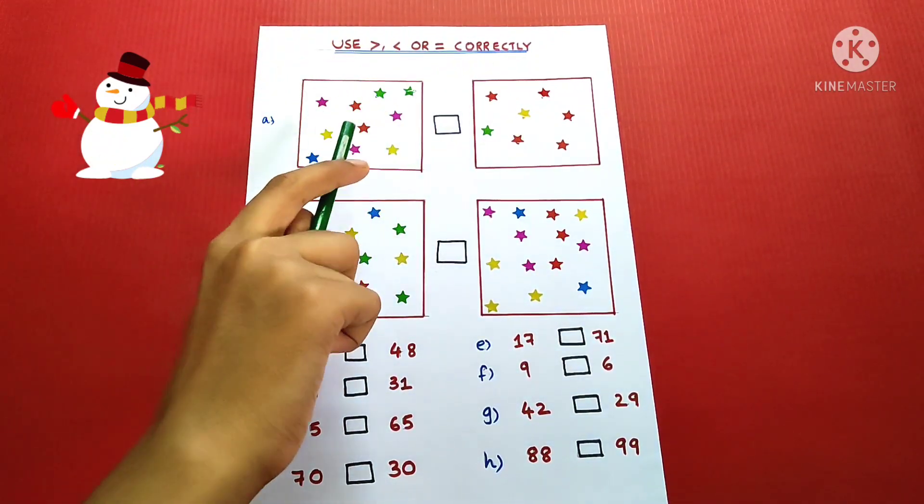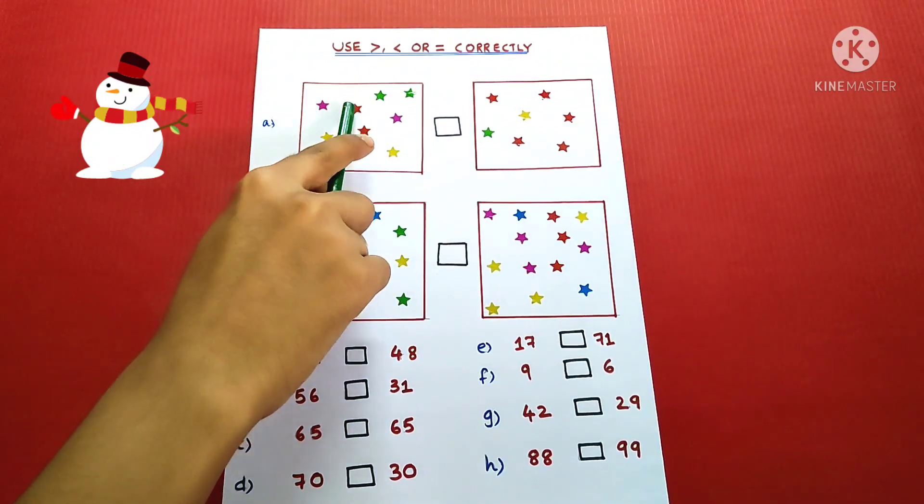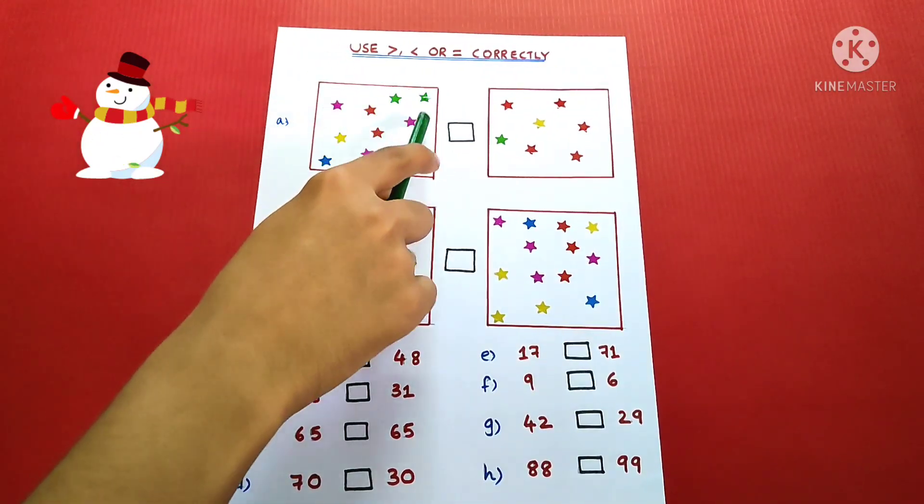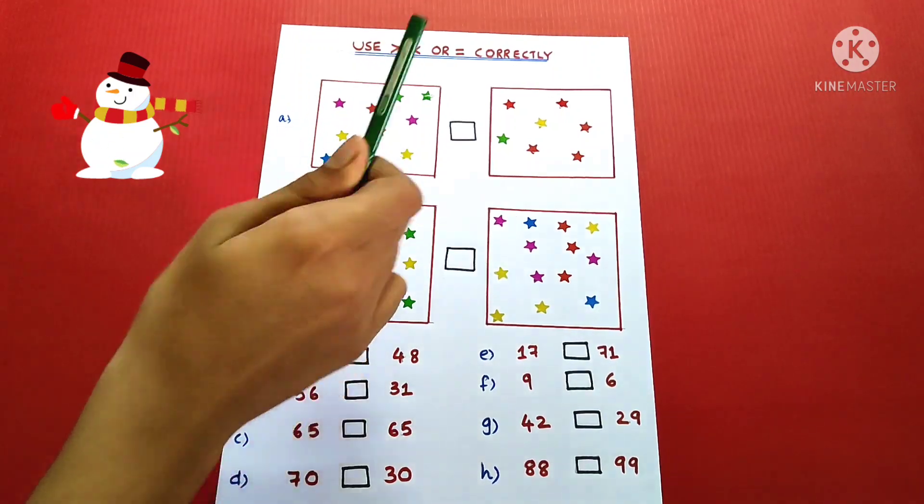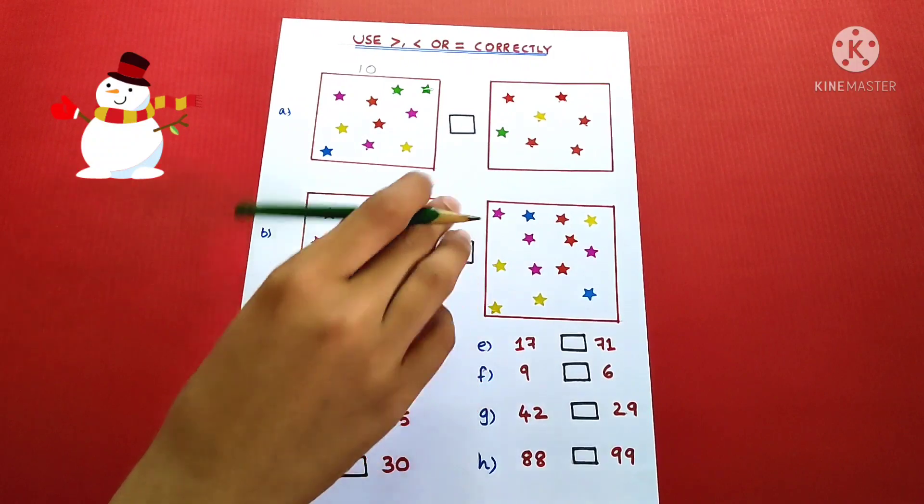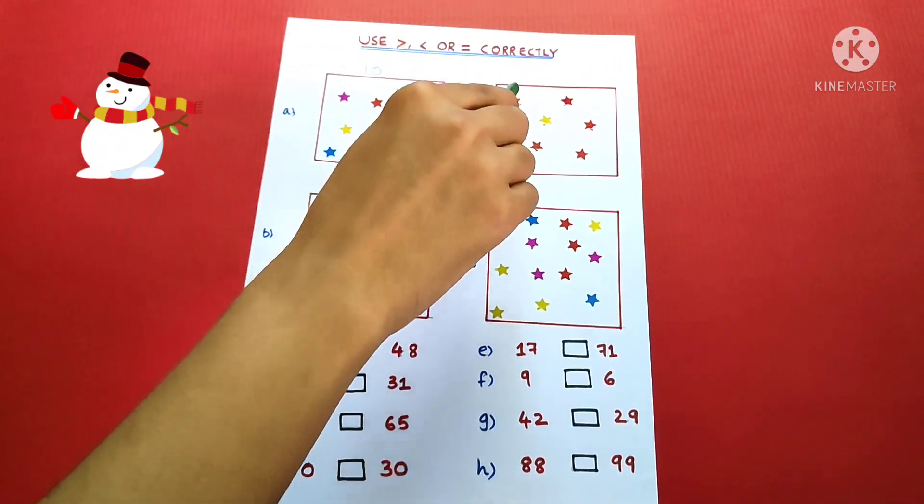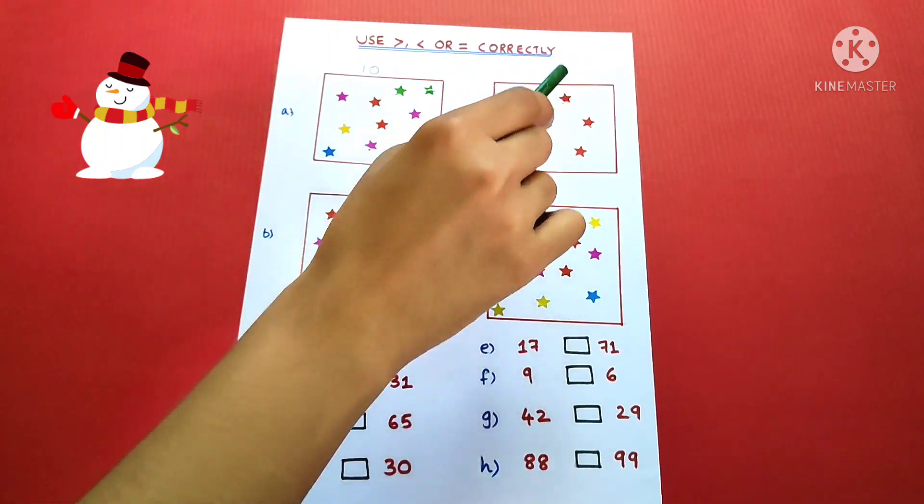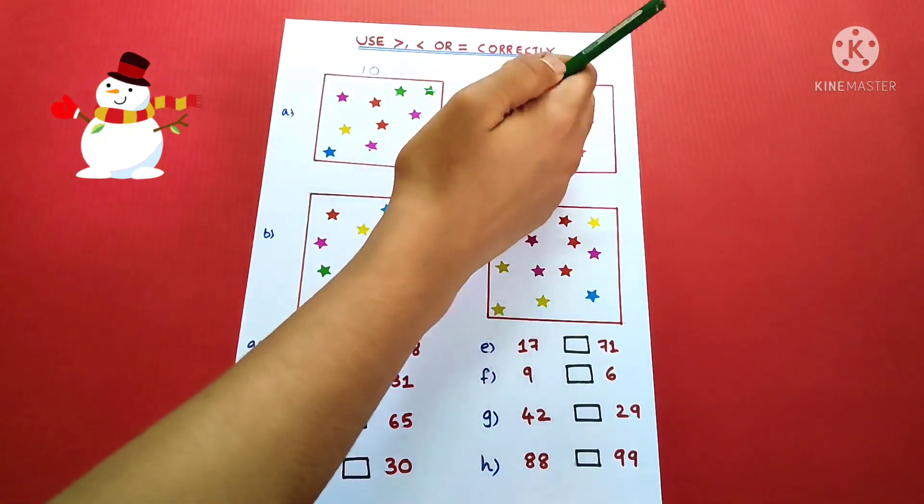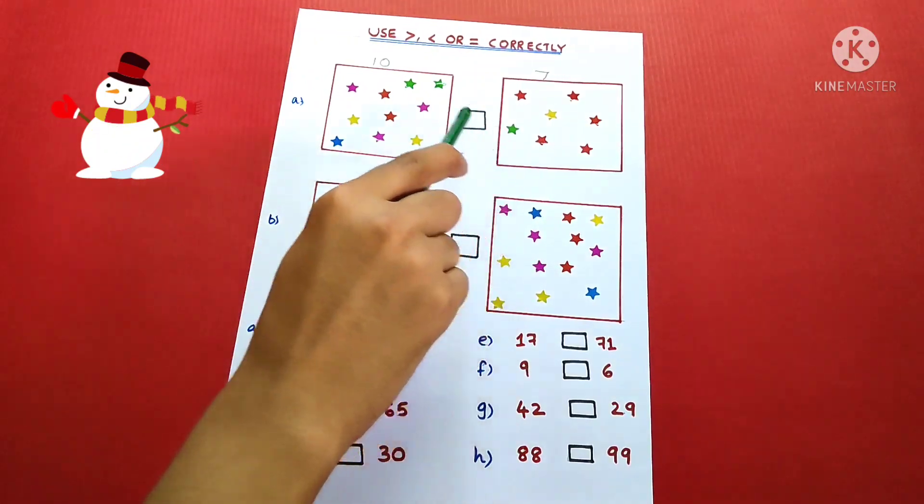1, 2, 3, 4, 5, 6, 7, 8, 9, 10. Now we have to count the number of stars in this box. 10 stars are greater than 7.